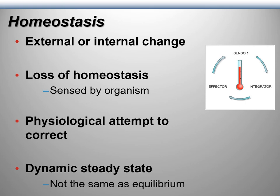Dynamic steady state is not the same as equilibrium. A dead body achieves temperature equilibrium — it assumes room temperature. But a living person stays around 97–98 degrees even when it gets chilly. If their temperature starts to drop, the body tries to correct through shivering or complex behaviors like putting on a coat. All of those are examples of the same fundamental phenomenon: we sense, we integrate, we send to effectors, and the response alleviates the departure from homeostasis.